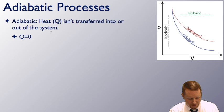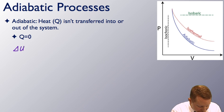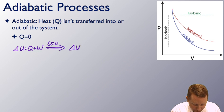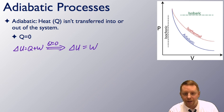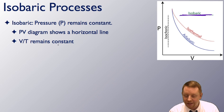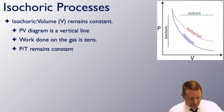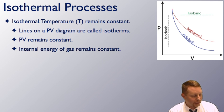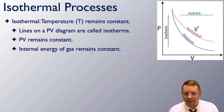In an adiabatic process, Q equals zero. Since delta U equals Q plus W and Q is zero, the change in internal energy equals the work done on the system. In an isobaric process, pressure remains constant — the PV diagram shows a horizontal line, and volume over temperature remains constant. In an isochoric process, volume remains constant — the PV diagram is a vertical line with no area underneath, so work done is zero, and pressure over temperature remains constant. In an isothermal process, temperature remains constant, the curves are called isotherms, PV remains constant, and the internal energy of the gas must remain constant.